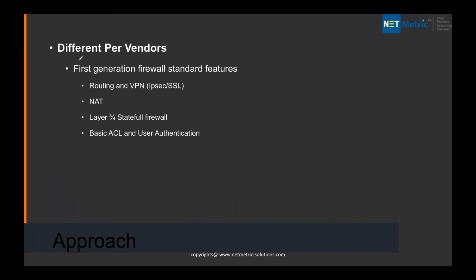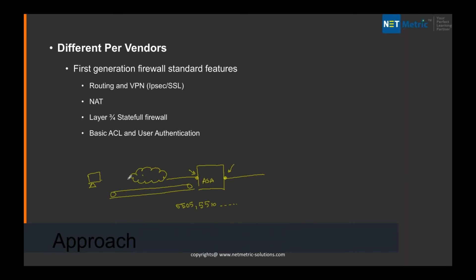Let's talk about the different vendor approaches. When we talk about the first-generation firewall, like the ASA firewall — models 5505, 5510, 5525, 5515 — these are the first-generation firewalls deployed in routed mode. From this firewall, if connected with internet, any client can build a VPN tunnel. These are capable of VPN, remote access VPN, routing, NAT, stateful inspection, basic ACL, and user authentication.